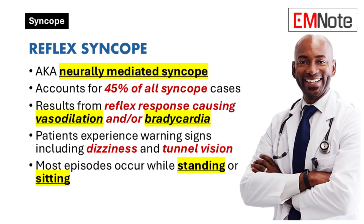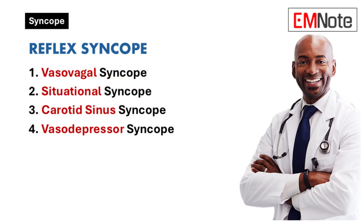Patients often report a prodromal phase with symptoms like dizziness, lightheadedness, or visual disturbances such as tunnel vision. Episodes typically occur in upright positions — standing or sitting — and while the condition itself isn't life-threatening, injuries sustained during fainting episodes can be significant. The four subtypes of reflex syncope are vasovagal syncope, situational syncope, carotid sinus syncope, and vasodepressor syncope.